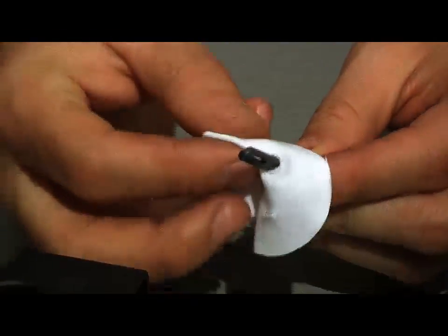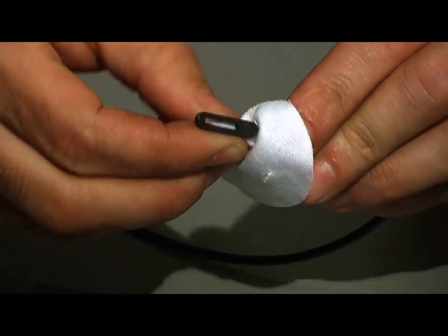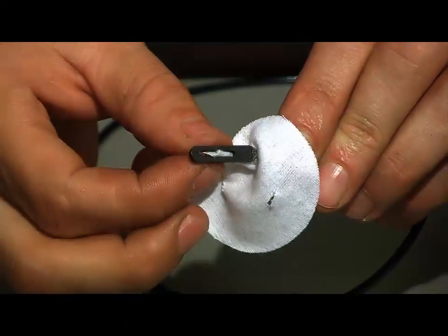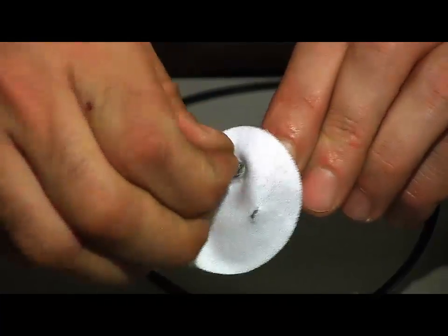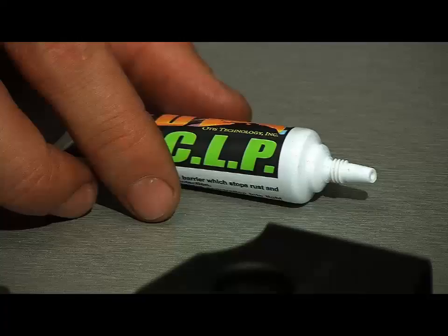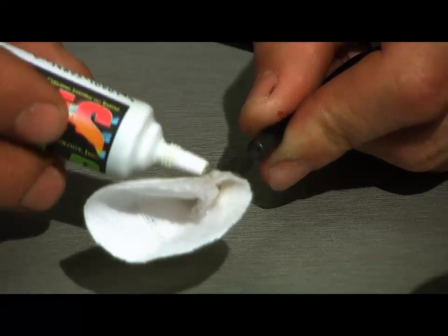Take the tip, insert it through the slot in the patch, take a pinch on the patch, feed it back through the tip, and pull. That locks the swab on the tip. Now we are going to put a few drops of solvent on the front end of the patch.